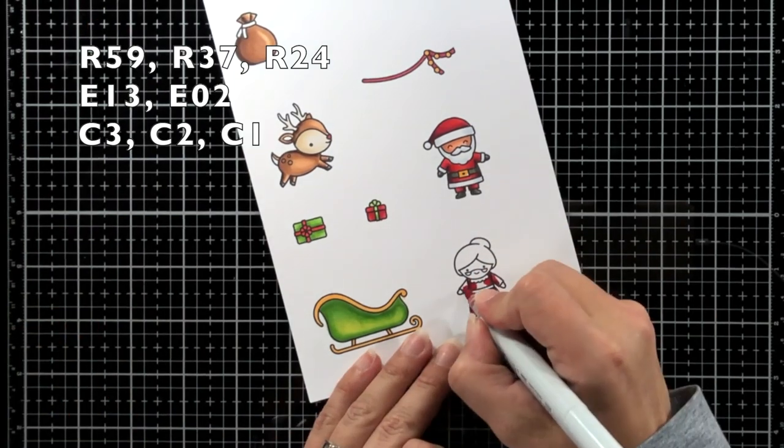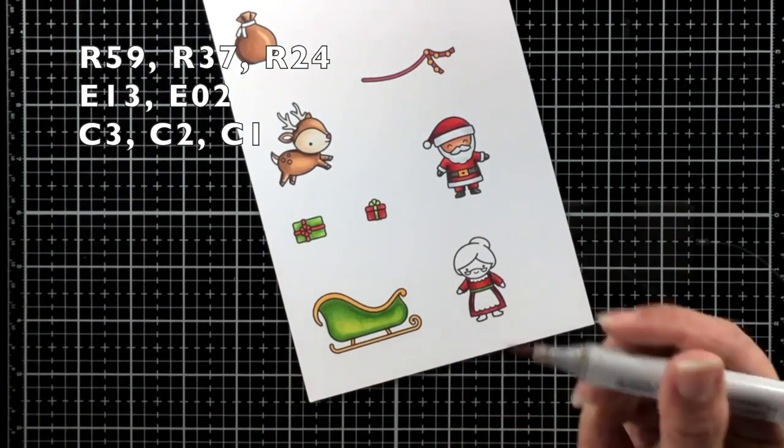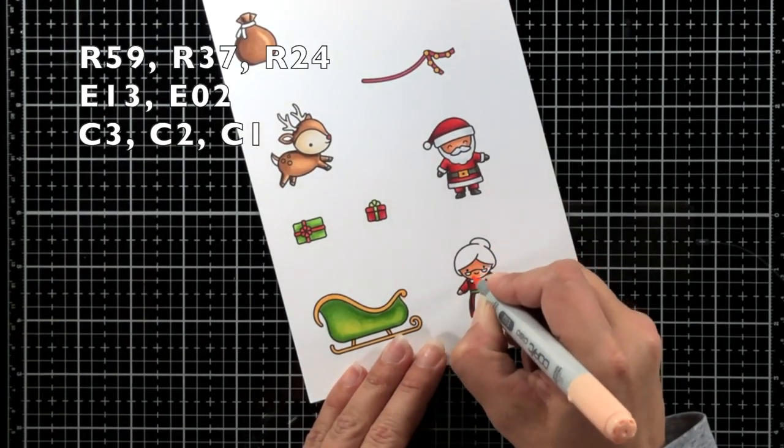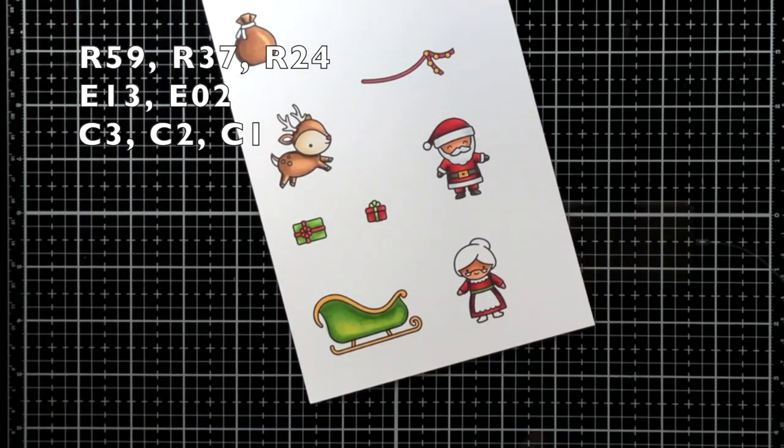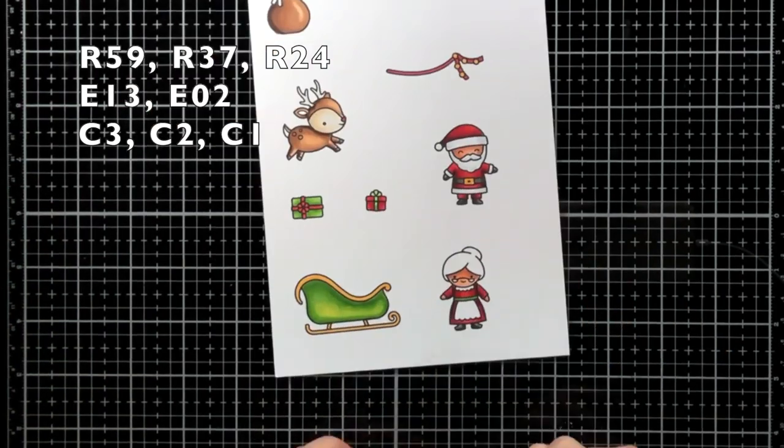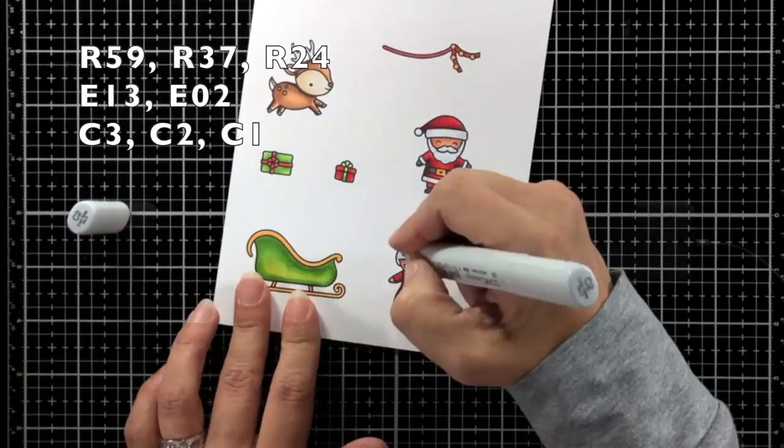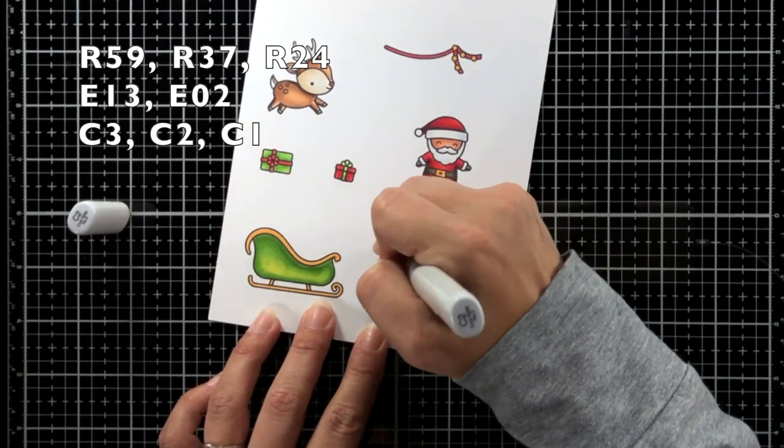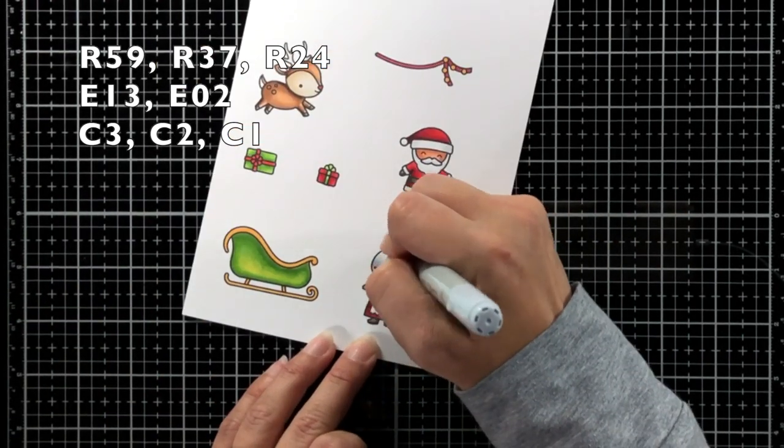Now for the reds I'm using R59, R37, and R24. I also did E13 and E02 for the face and I used C3, C2, and C1 for Mrs. Claus's hair.